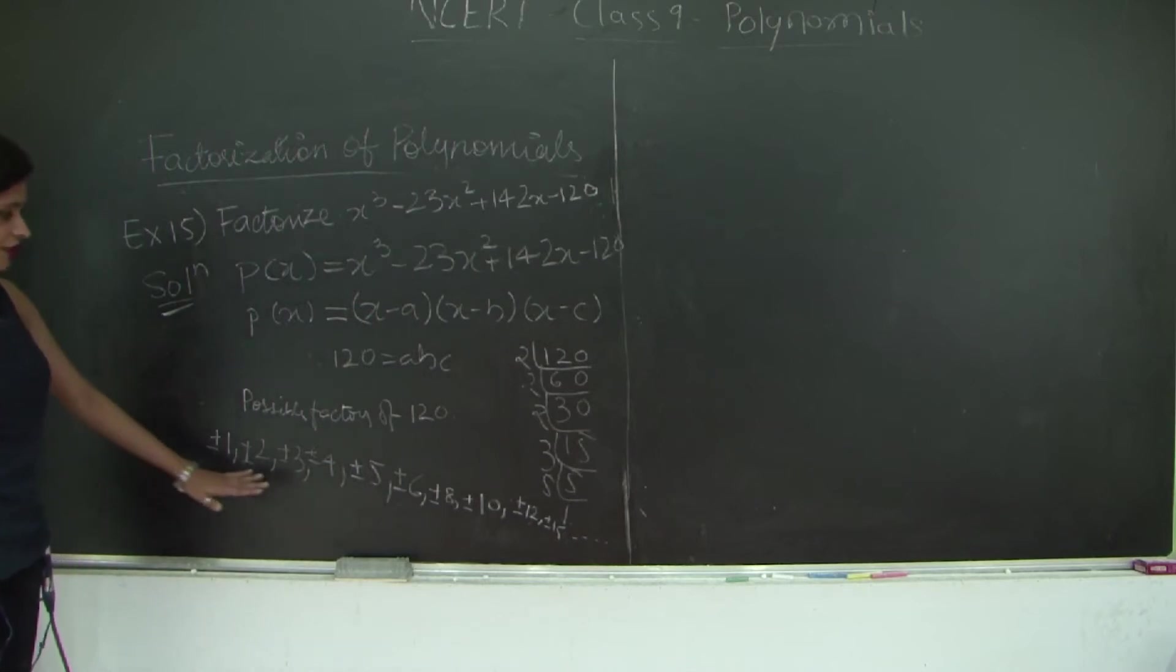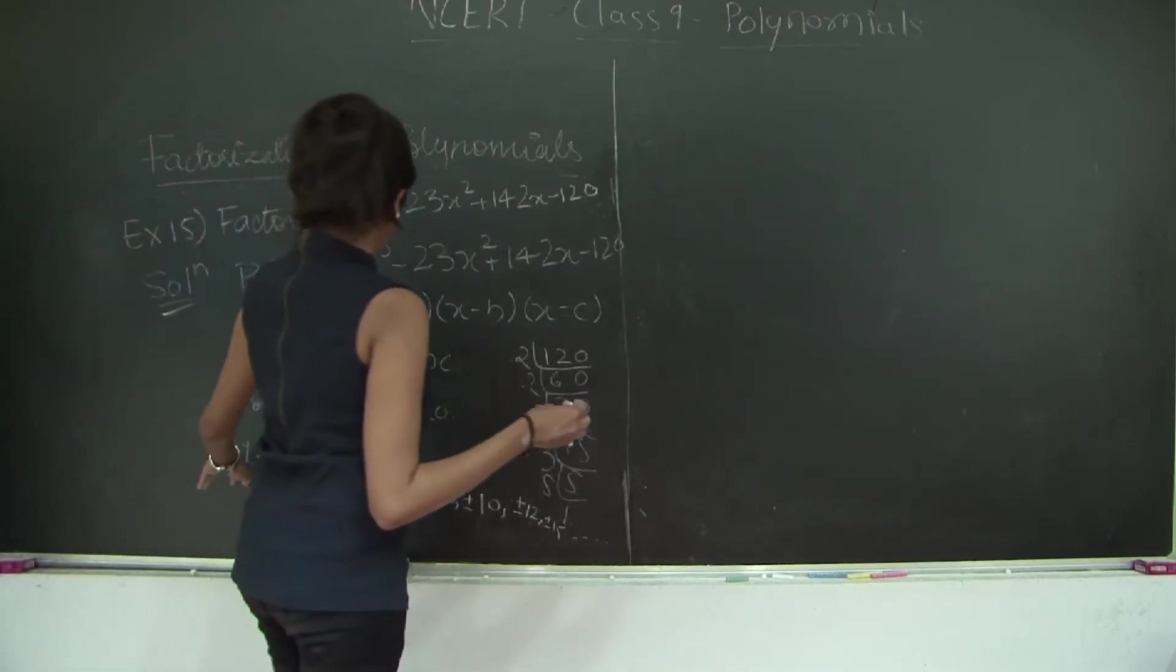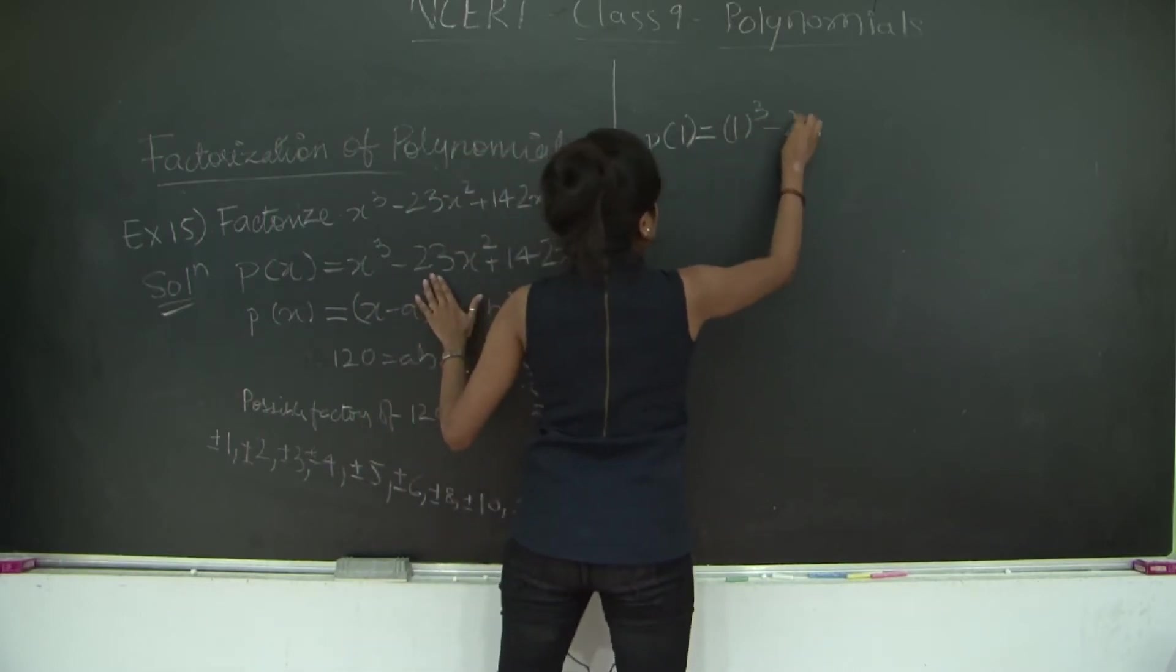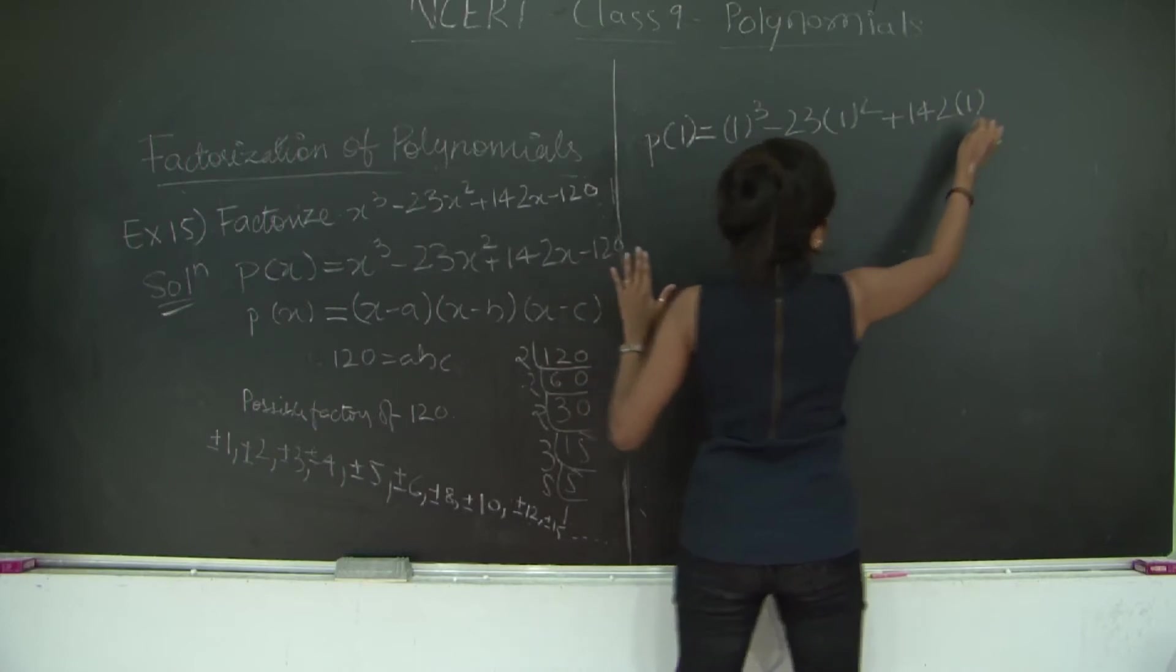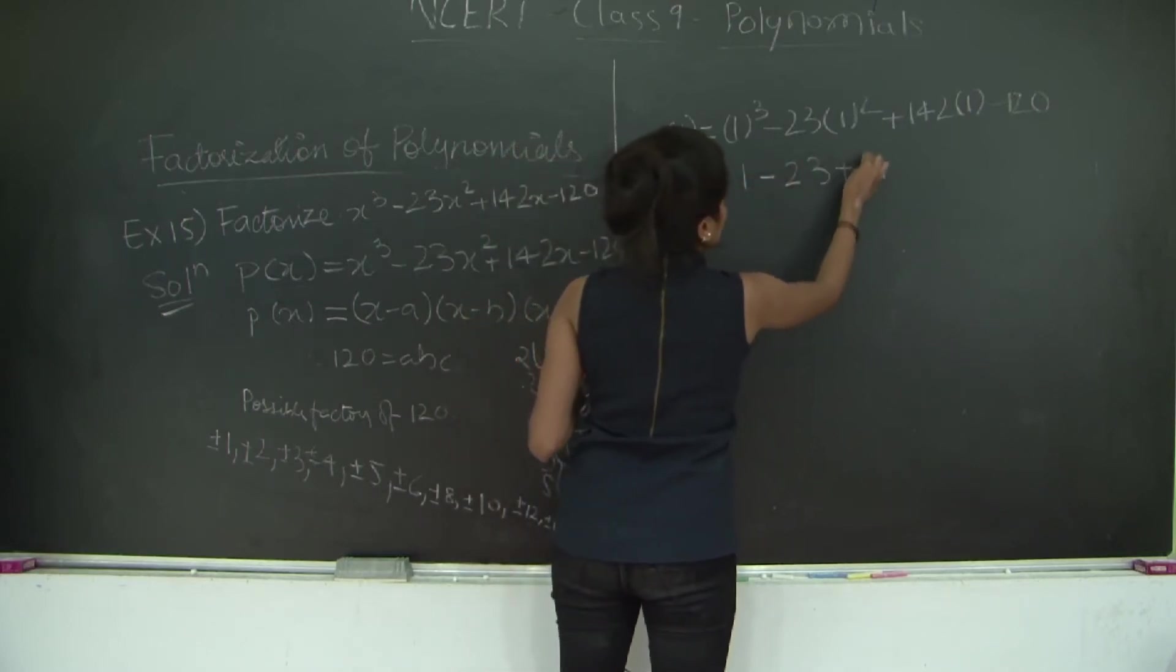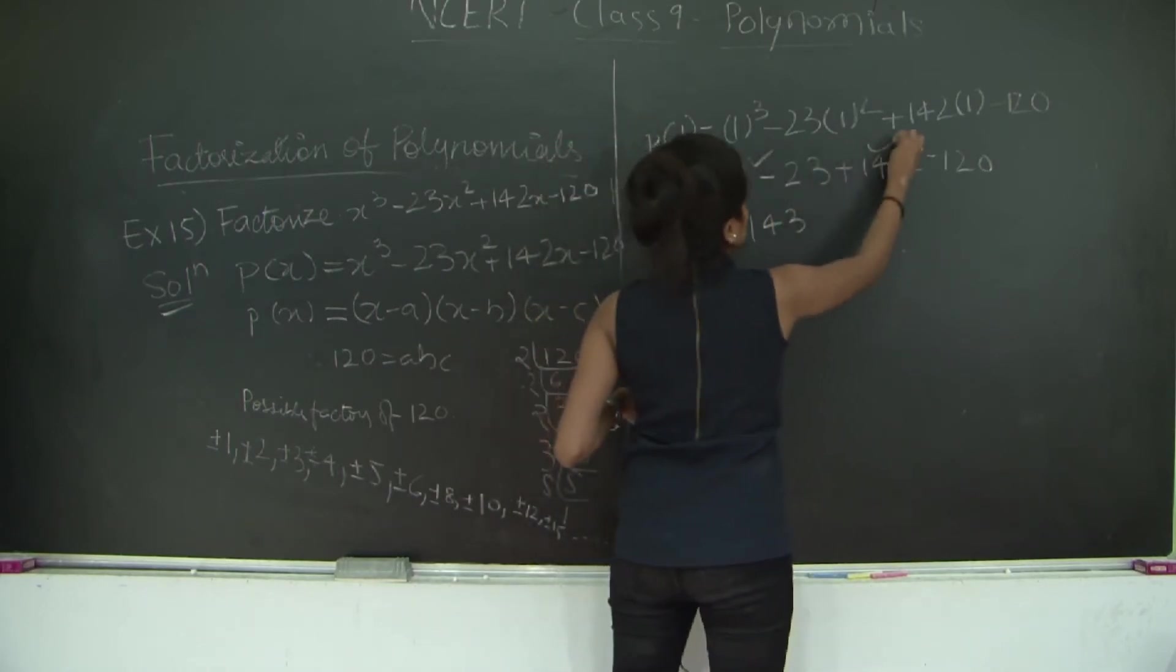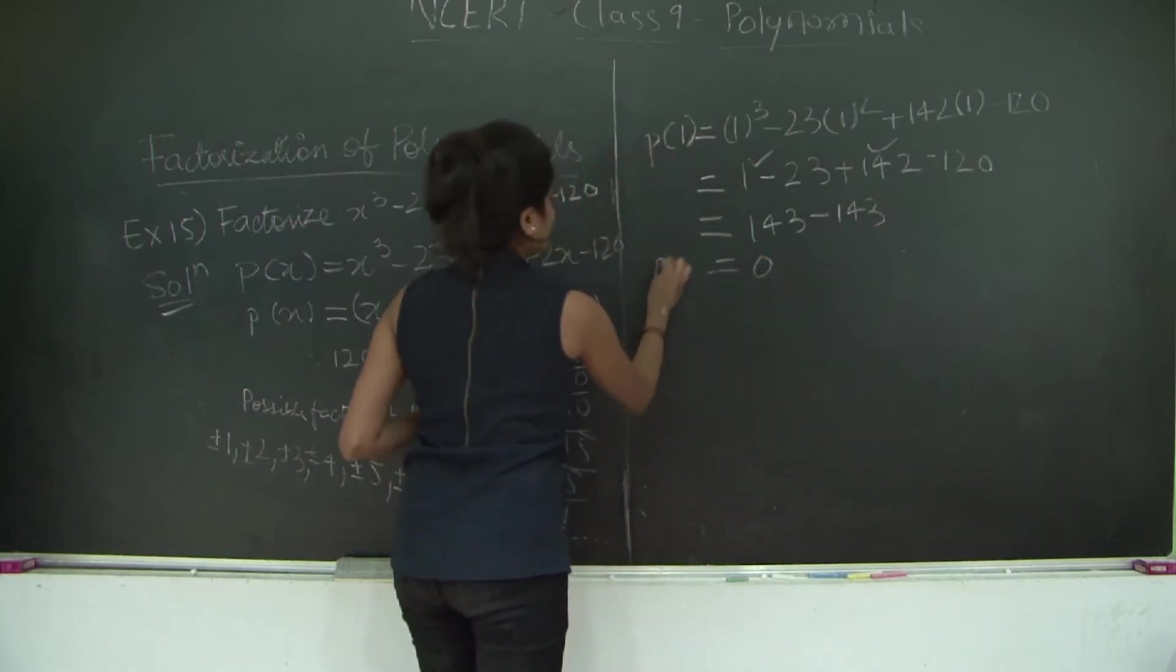Let's try to find whether we get a factor using these terms. If not, we will continue finding the other factors. Let's start with +1. p(1) = 1³ - 23(1)² + 142(1) - 120 = 1 - 23 + 142 - 120. The positive terms are 142 and 1, giving 143. The negative terms are -23 and -120, giving -143, which equals 0. p(1) = 0.